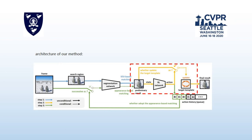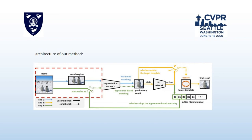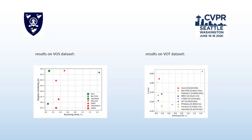The first decision is to choose a matching method, like RL-based matching or appearance-based matching. The second one is to decide whether to update the target template or not. Experiments show RL-based matching is almost 10 times faster than the previous state-of-the-art method, with even higher accuracy.